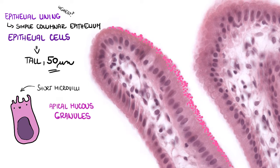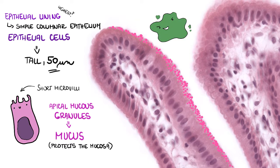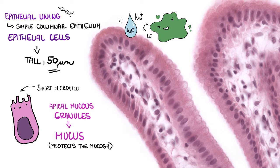These cells secrete mucus, which protects the mucosa from the harmful effects of bile. They are also able to transport ions and water, thus partaking in the final composition of bile.